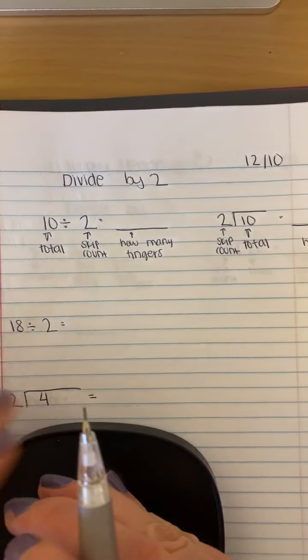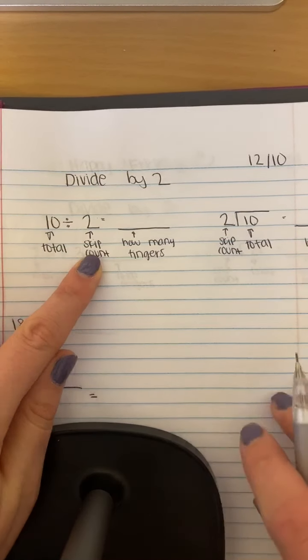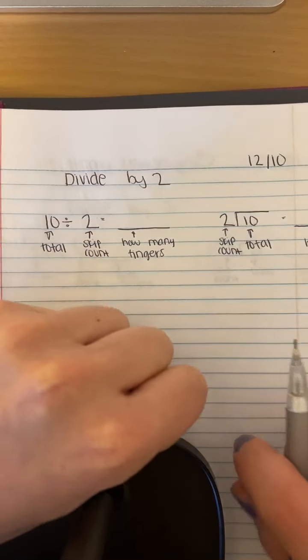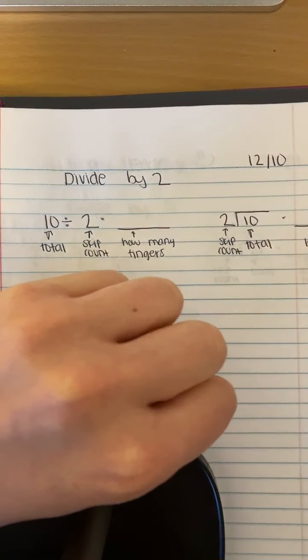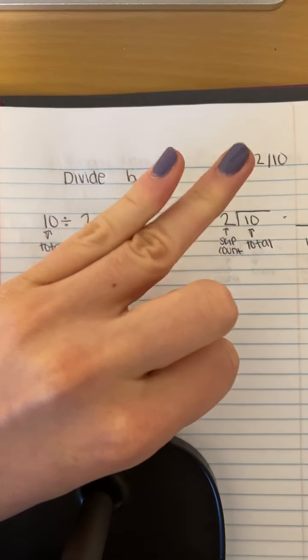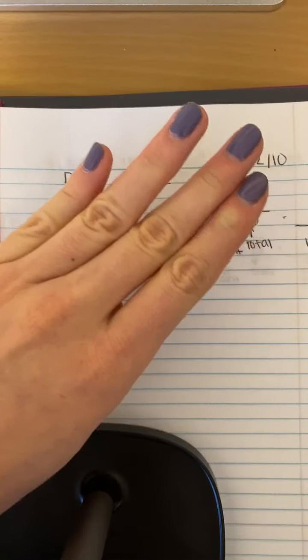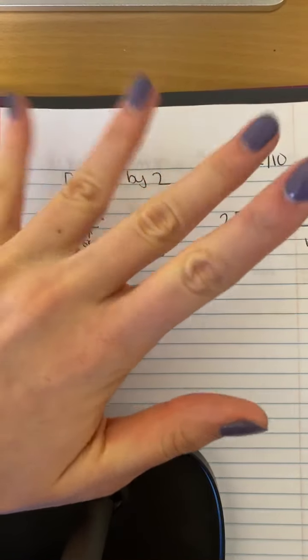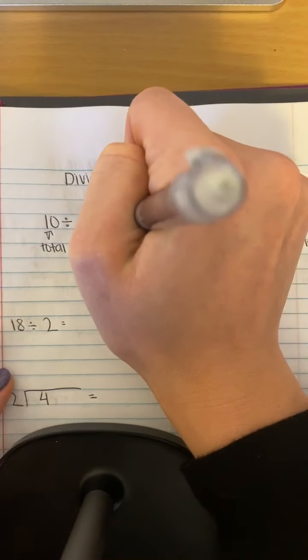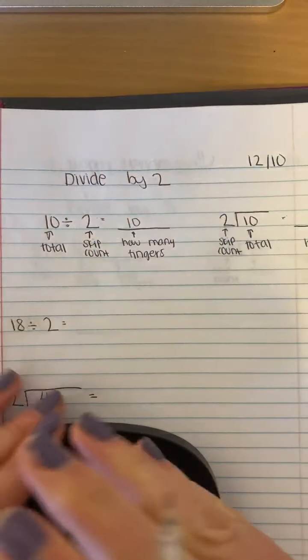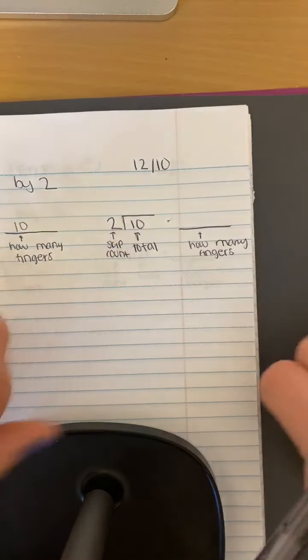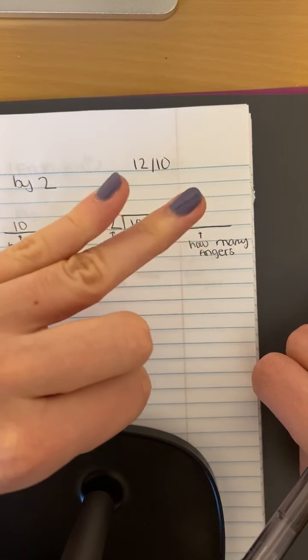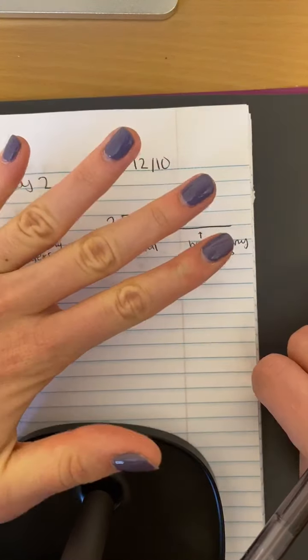So let's first do our examples. This is my total, this is what I'm skip counting by. So I'm going to skip count by twos and stop when I get to ten, and see how many fingers I used. Two, four, six, eight, ten. I only used five fingers, so my answer is going to be ten. And same with over here. Here is my total, this is what I'm skip counting by, so I'm going to do that. Two, four, six, eight, ten.